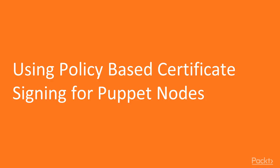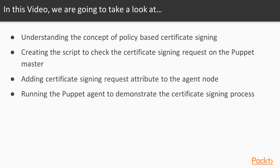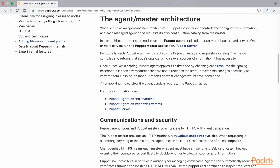In this video, we will look at using policy-based certificate signing for Puppet nodes. We will first understand the concept of policy-based certificate signing and the advantages it provides over the normal certificate signing process. We will then create a script on the Puppet server to check the incoming certificate signing request and validate it. We will then add some certificate signing request attributes to the agent nodes which will help the Puppet server to validate the agent nodes. Finally, we will run the Puppet agents to demonstrate the policy-based certificate signing process.